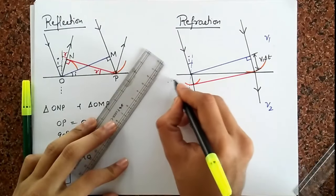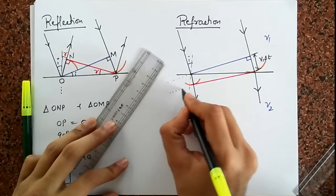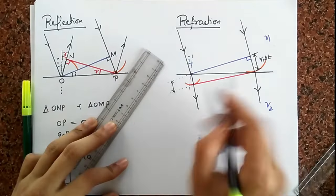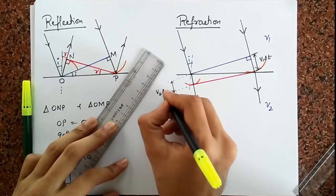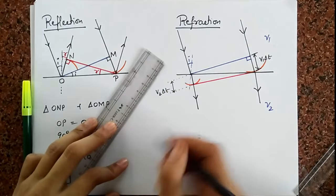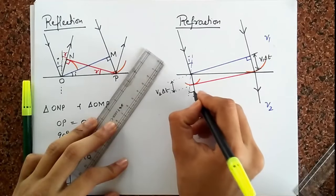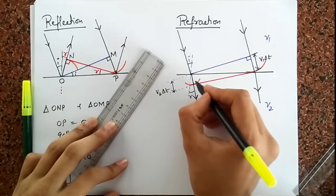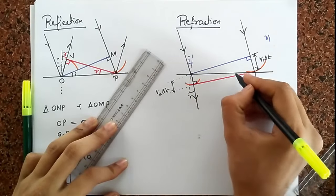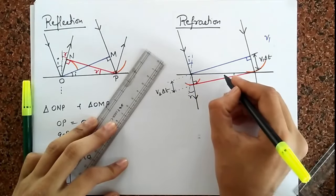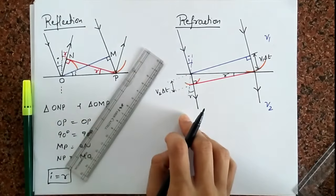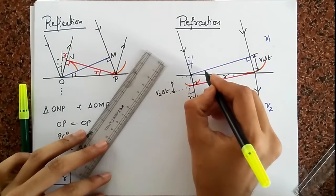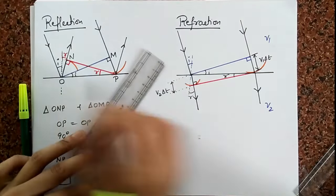Now, how much is going to be this length? Well, it has to be equal to V2 times delta T. That has to be the new radius. Now, our angle of refraction is going to be this one, R. But if this is the angle of refraction R and this is 90 degrees, this is 90 minus R, this must also be R. And now, I can call this as I. Same thing as over here.